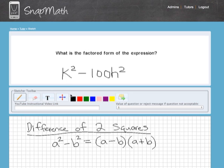This is a special type of factorization. As soon as you see the k squared and then this guy right here, the 100h squared, these are both perfect squares.